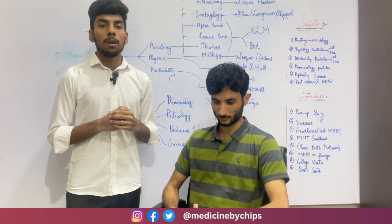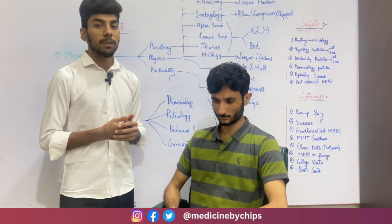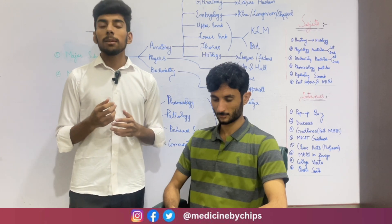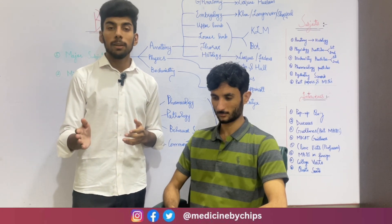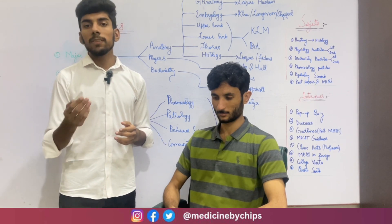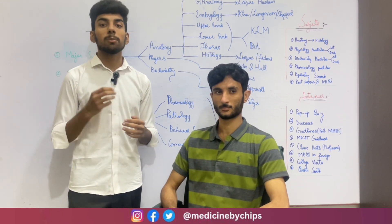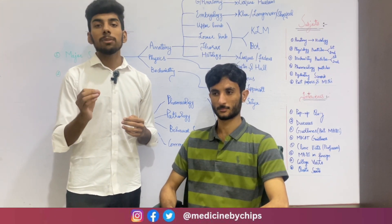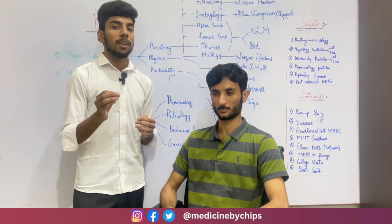For the radial pulse, first of all we will approach the patient from the right side. We will take consent from him and then we will ask him to raise his right hand up to his heart level in a semi-flexed position. Then we will place the tips of our middle three fingers on his right radial artery just before his wrist.